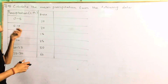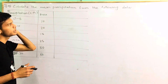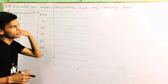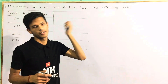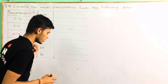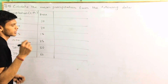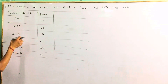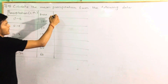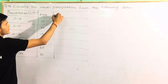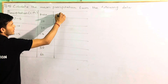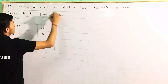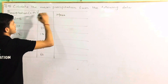But what is it? Calculate the mean precipitation from the flowing data. Now, if you look at the average, you can see the average of the precipitation. This is the average of the precipitation. This is the mean.